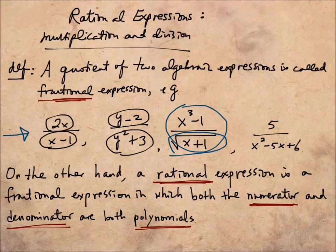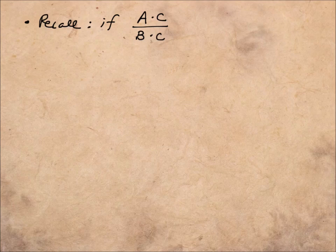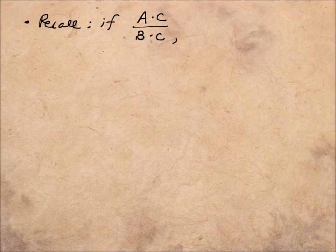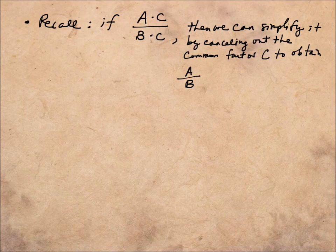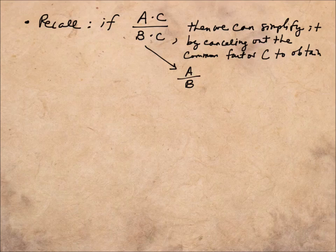If an expression involves a square root, cube root, or any sort of power, it becomes relatively harder to work with systematically. Recall that if we have an expression a times c divided by b times c, where a, b, c are algebraic expressions involving polynomials, we can simplify by canceling out the common factor of c to obtain a divided by b. The only thing we have to be careful about is that c is not equal to zero.